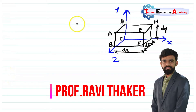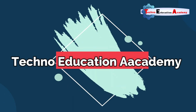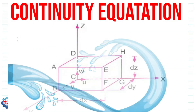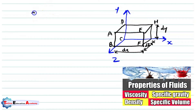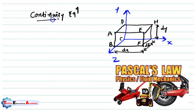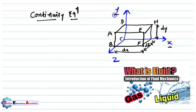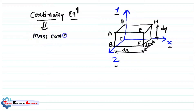Hello friends, I am Ravit Harkar, welcome back to Techno-Increation Academy. In this lecture, we will derive the expression for the continuity equation. We will start the continuity equation derivation in the form of Cartesian coordinates — x, y, and z axes. It is also called the mass conservation equation.